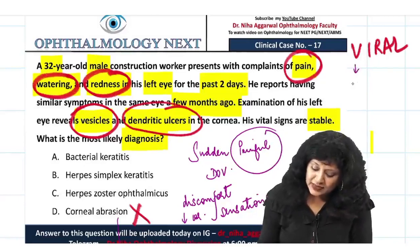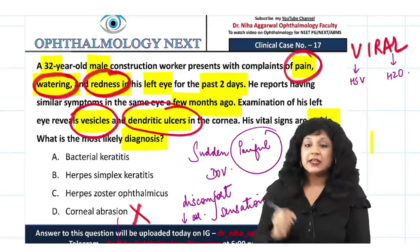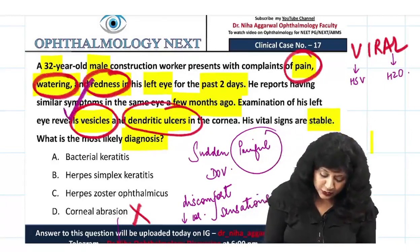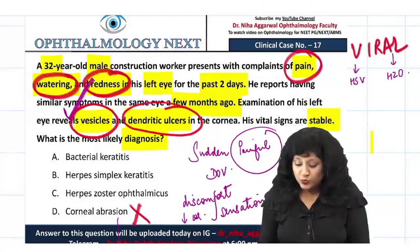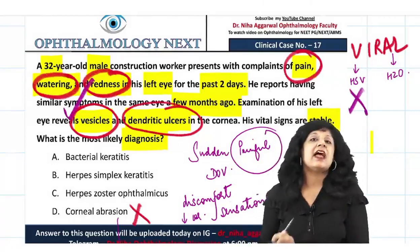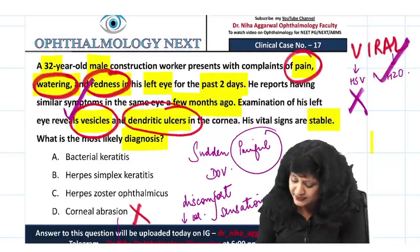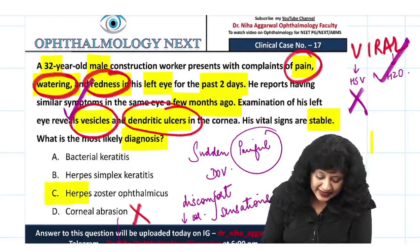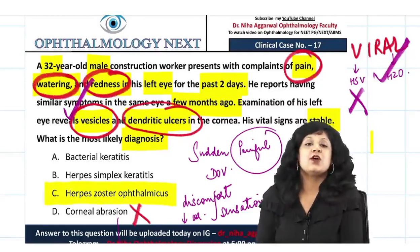Now we narrow down to herpes simplex virus versus herpes zoster ophthalmicus. Importantly, vesicles are also present in this patient. We do not have vesicles in herpes simplex — vesicles are characteristic of herpes zoster. Therefore, this is most probably a case of herpes zoster ophthalmicus.